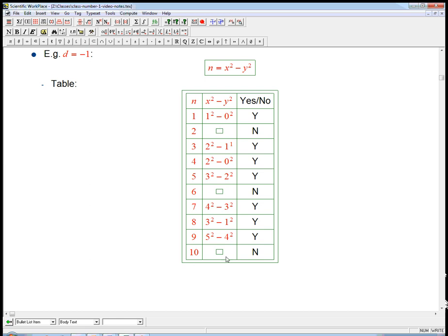6 also can't be done. 10 also can't be done. So play with that if you want, or you can take it on faith that it really is impossible to do this.